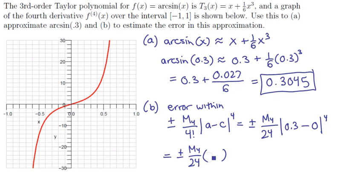And 0.3 to the fourth power is going to be ±0.0081/24 times M4.